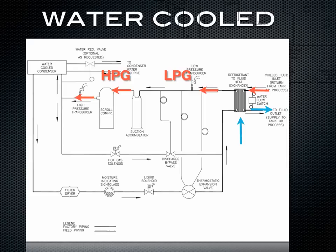That high-pressure gas is going to leave the compressor and go to the water-cooled condensers, and that heat will be rejected to a cooling tower, building water, or geothermal. Now how that works is the second law of thermodynamics. The temperature of that high-pressure gas could be 210 degrees. The cooling tower or building water could be around 85, 105, or even 115 degrees. The second law of thermodynamics will come into play because that cooling tower water is a lot colder than your high-pressure gas, so the heat will go towards that.